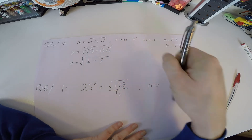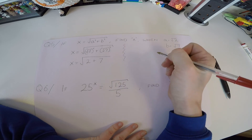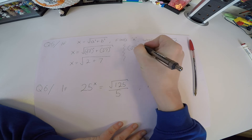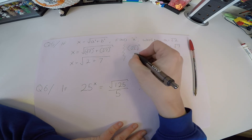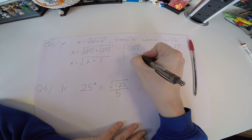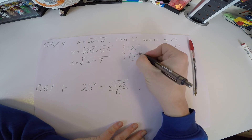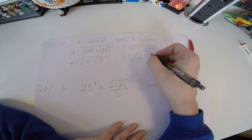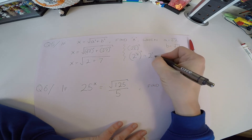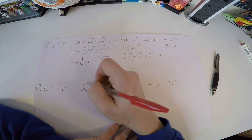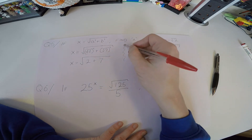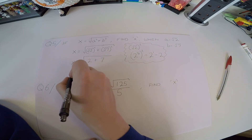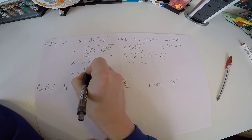To convince yourself why: the square root is the same as the power of a half, so (√2)² = 2 to the power of a half, squared — multiply the powers: one half times two equals one, so it's 2 to the power of 1, which is just 2. The same applies for 7. So x = √(2 + 7) = √9 = 3.